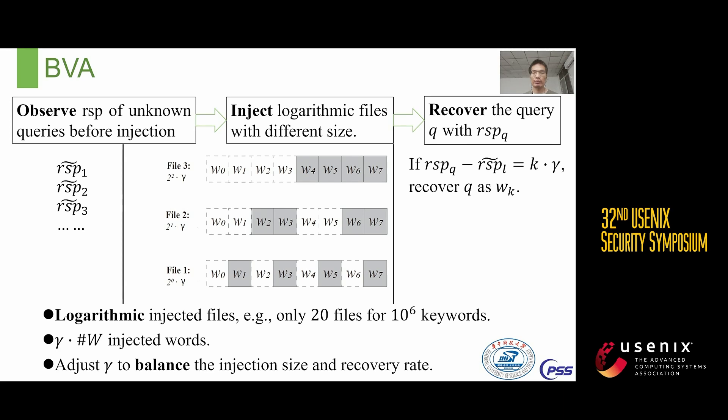Now let's introduce our first attack, BVA, divided into three stages. In the baseline phase, the adversary observes the response sizes of unknown queries, denoted as RISP1, RISP2, and so on. In the injection phase, BVA has the adversary select a parameter gamma and generate injection files in a binary manner, ensuring the injection size corresponding to each keyword is exactly a different multiple of gamma. For example, when the total number of keywords is 8, the injection size for W0 is 0, for W1 is 1×gamma, for W2 is 2×gamma, and so on.